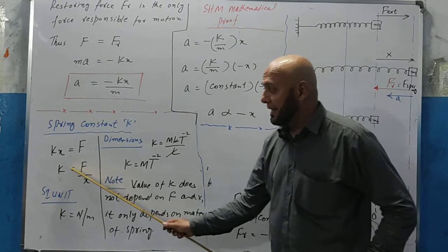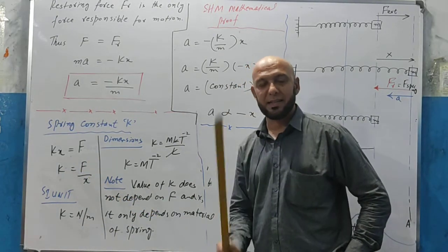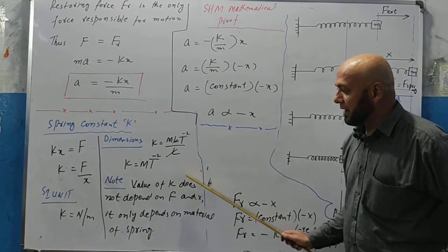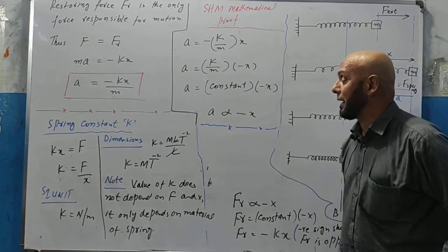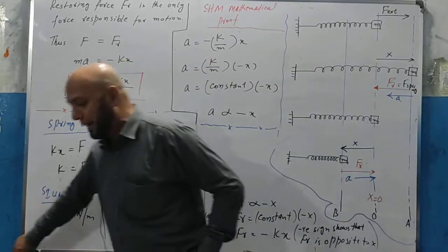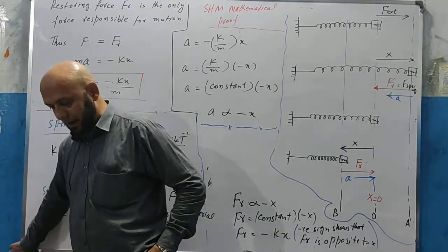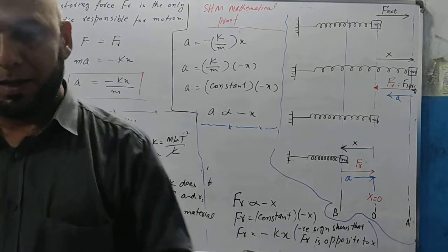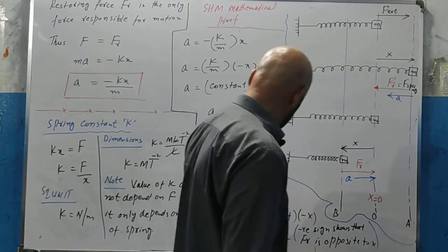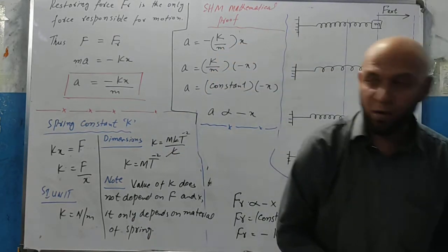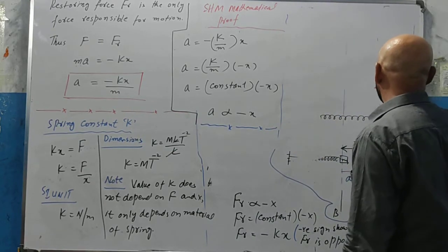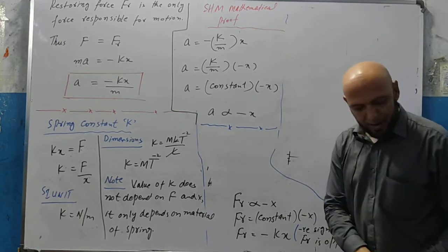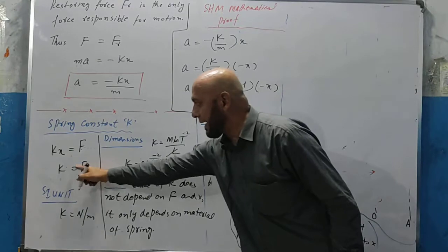Although it looks like k depends on F and x from the formula, that is not the case. The value of k does not depend on F and x — it only depends on the material of the spring: what material it's made of, its size, the thickness of the wire.